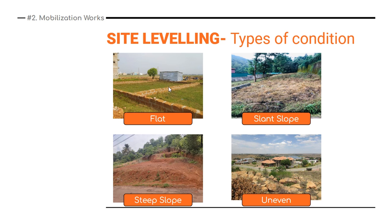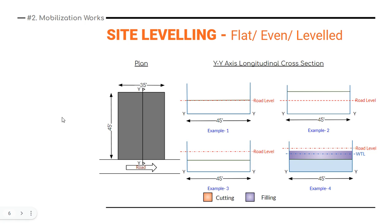There are four types of site conditions. In flat conditions, no leveling is needed at all — the surface is already flat and well-bounded, so you can directly start foundation work. The next condition is a slant slope where the degree is less than 30 degrees. Then there is a stiff slope where the angle is above 30 degrees. Finally, there is an uneven surface with rocky, very irregular land — this requires leveling. The last three conditions may require leveling, but not the flat one.